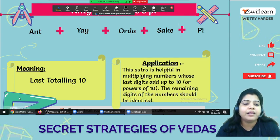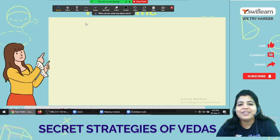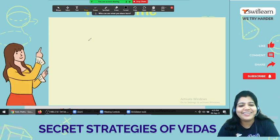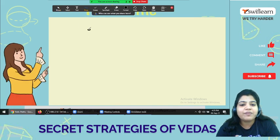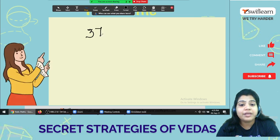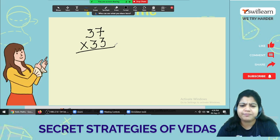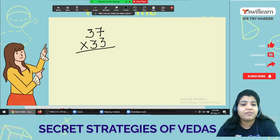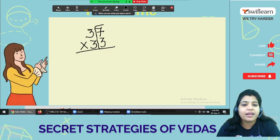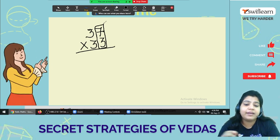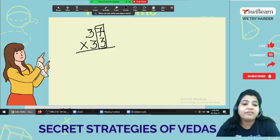Let's take example and see how we can do our calculation quickly. Here suppose I have a number 37 multiply 33. How we can do this one? See, here you can see the last digits adding sum up to 10, and the starting are identical.